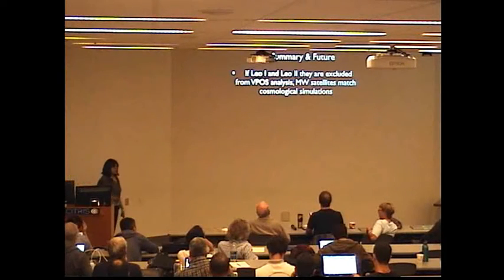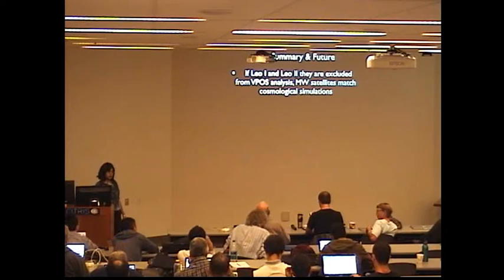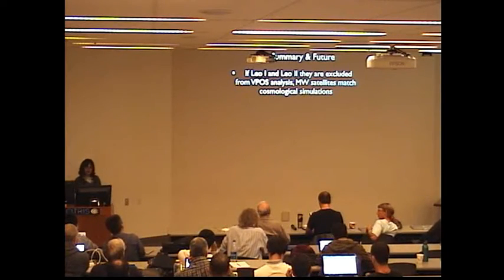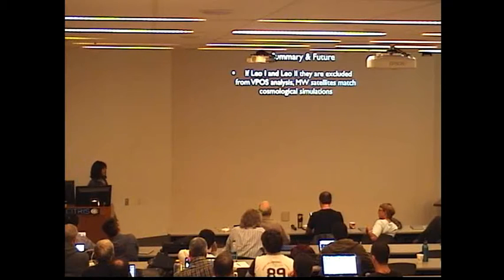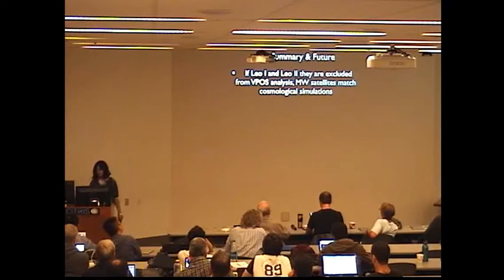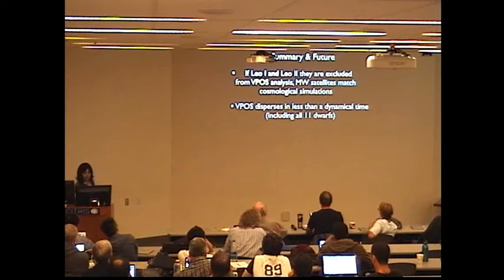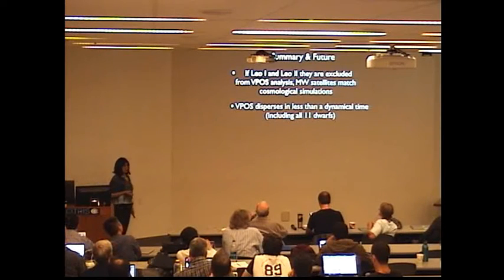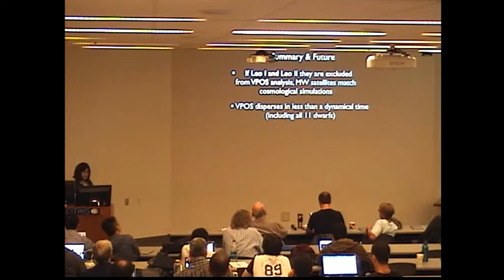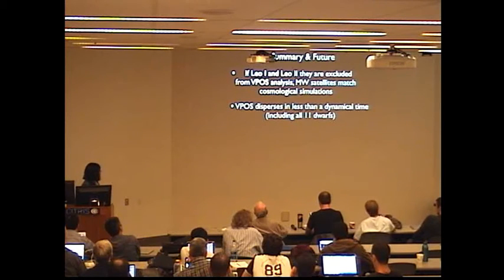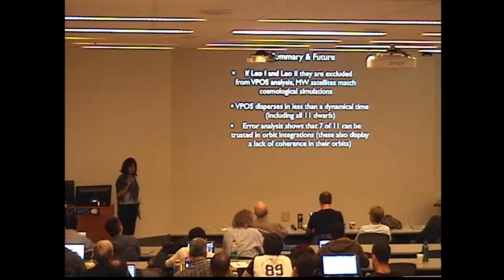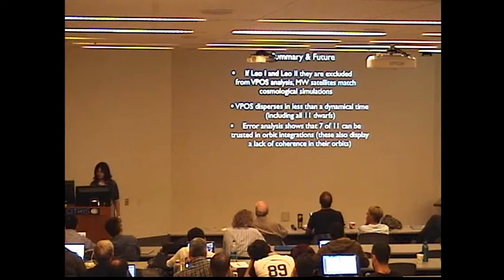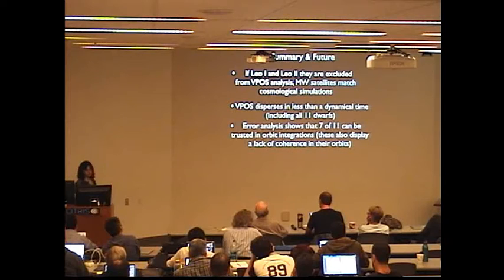Let me go ahead and summarize. We've shown that if LEO-1 and LEO-2, both of which have extreme kinematic properties, are excluded from the vast polar structure analysis, the distribution of Milky Way satellites matches cosmological simulations. We find that the vast polar structure of dwarf galaxies is not dynamically coherent. It disperses in less than a dynamical time when you include all the 11 classical Milky Way satellites, and that is also the case for the seven classical satellites for which you can definitely trust the HST proper motions. Those also display a lack of coherence in their orbits.